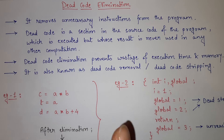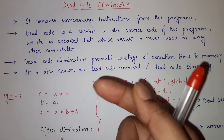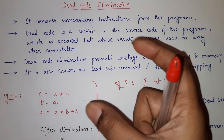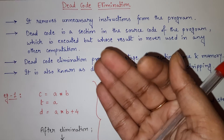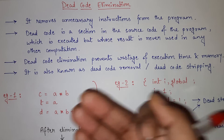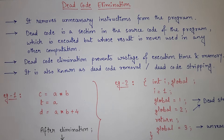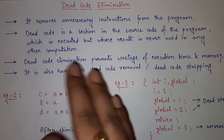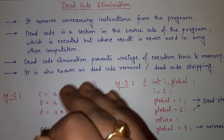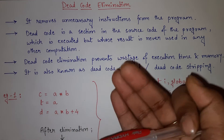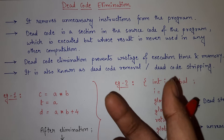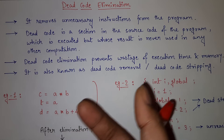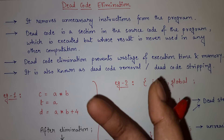So what is dead code? Dead code is the block of code or the part of code present in your program that is not actually affecting your output. The piece of code that is not executed, that is not affecting your output, or that is not affecting any other code present in your program — such a piece of code that is not used anyway, anywhere, is known as dead code.